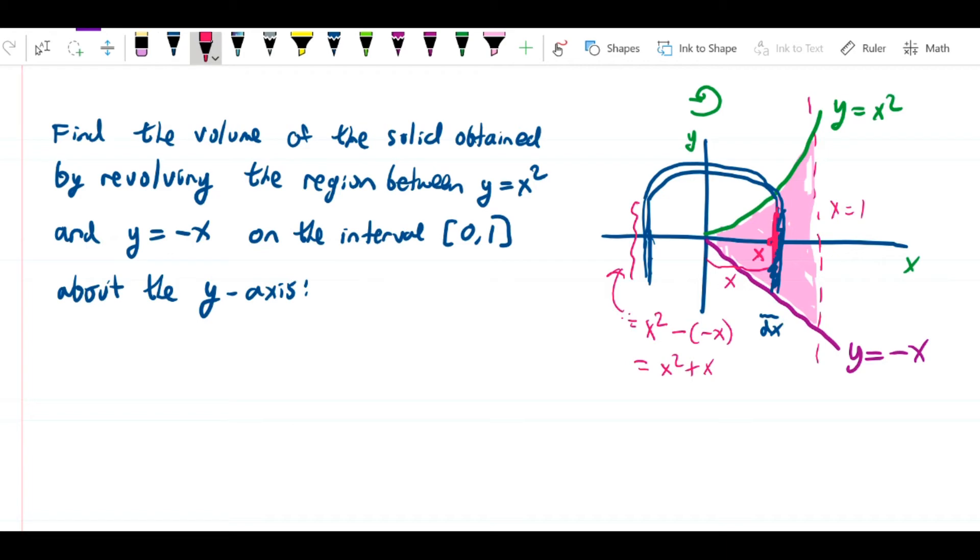So we can see is that the circumference of the shell is going to be 2 pi x. Its height is now x squared plus x, and the only thing that's different here is that the lowest possible x value for the pink region is x equals 0, because we're right on the y-axis, and the highest possible x value that occurs in the pink region is x equals 1.